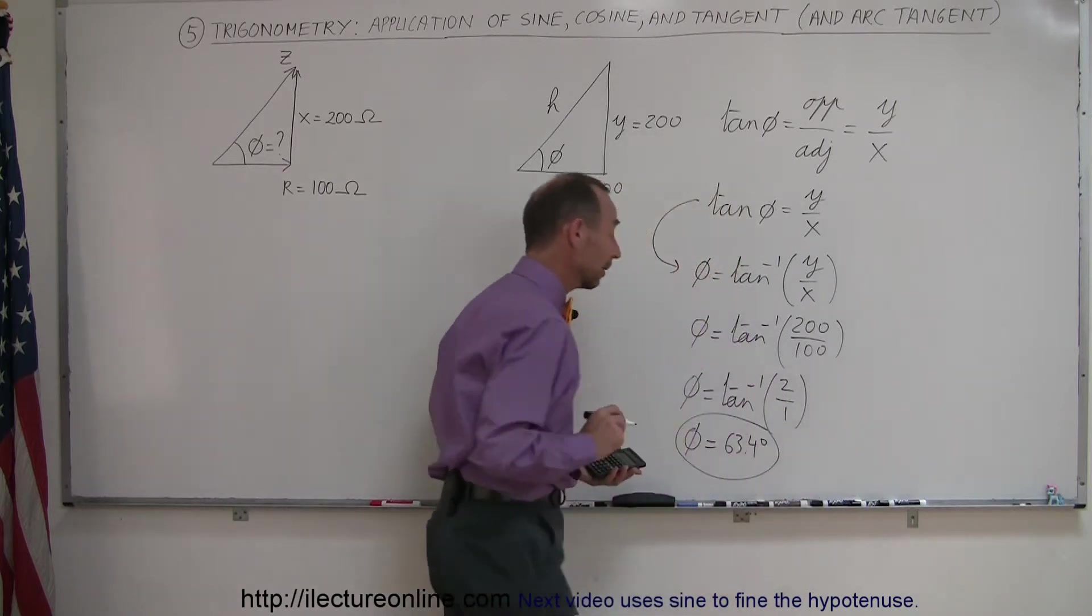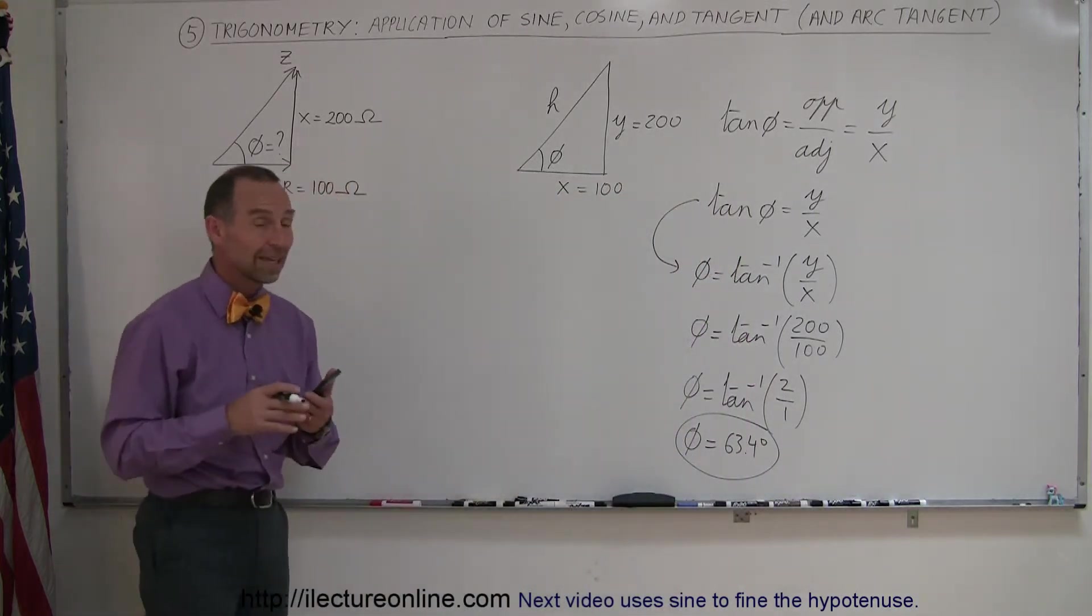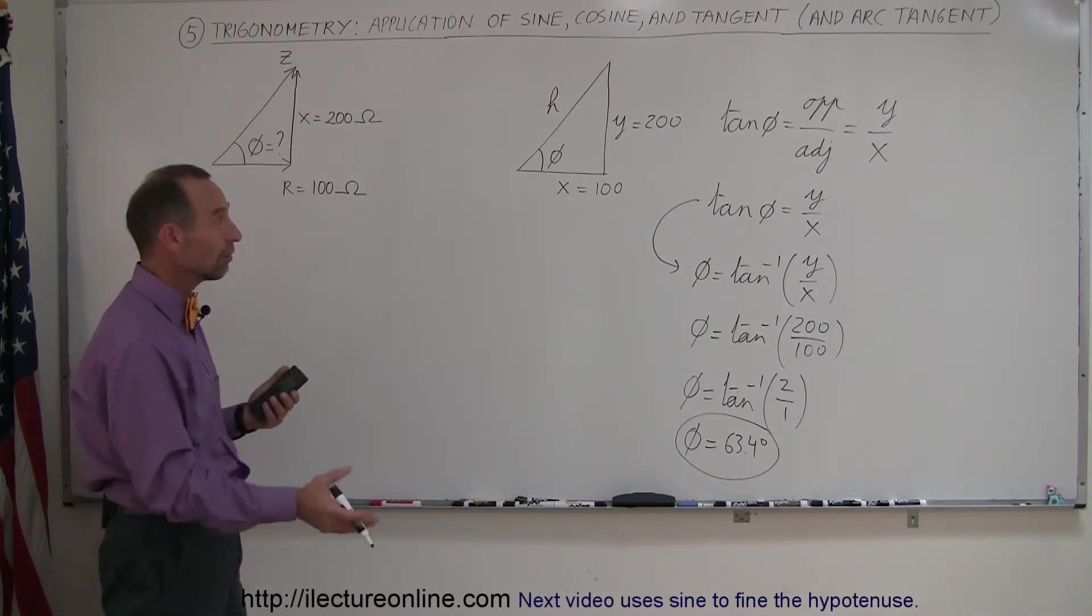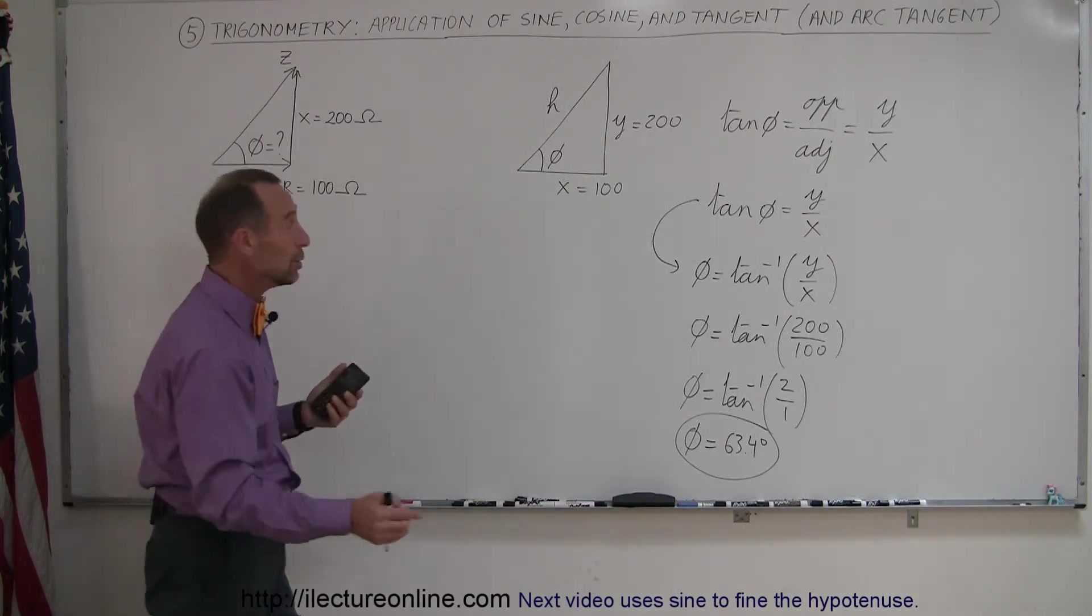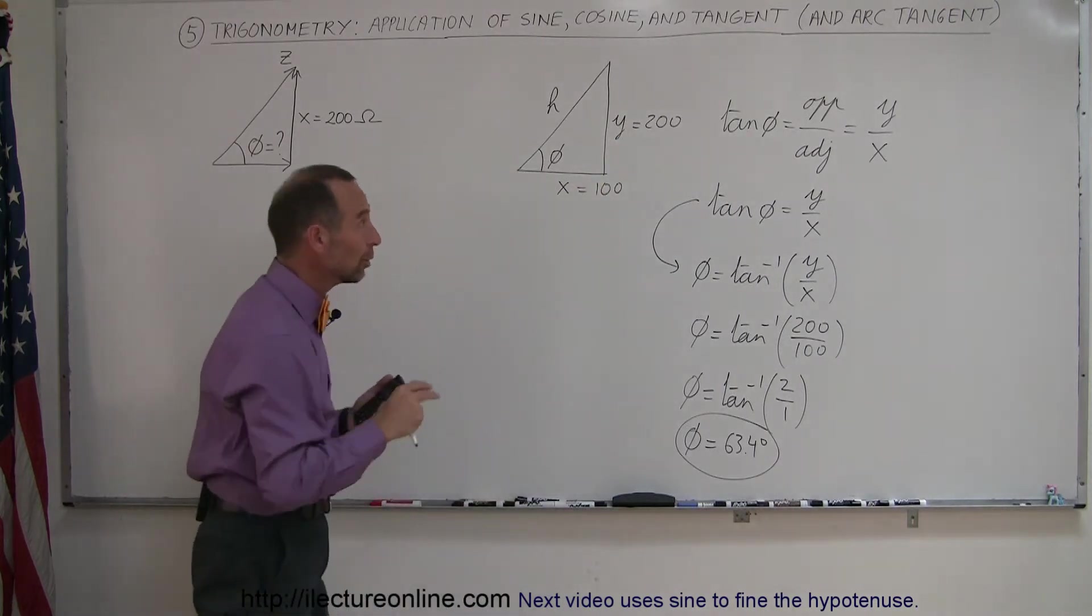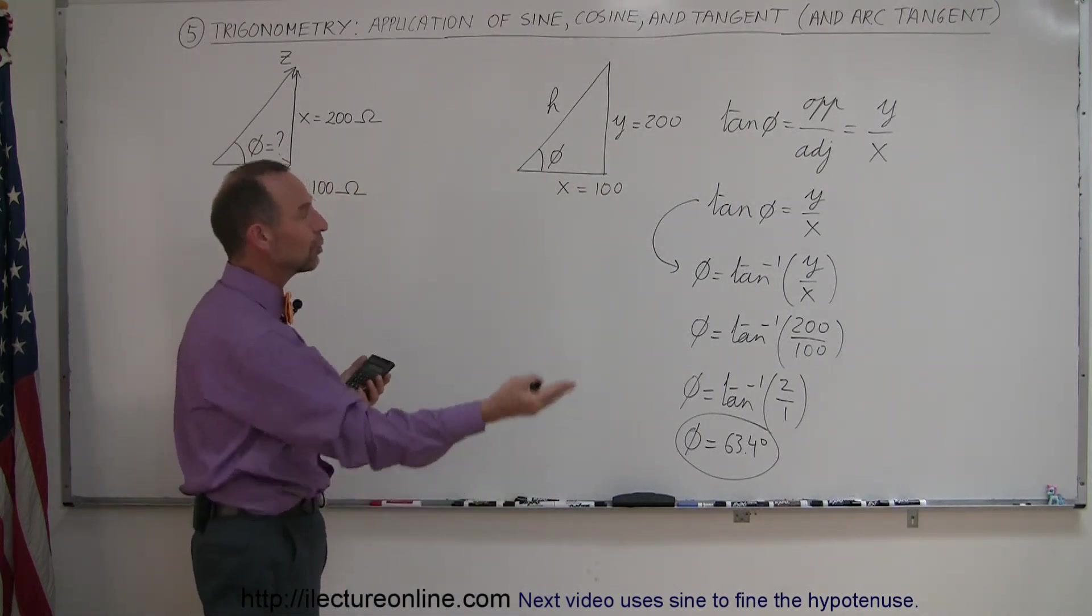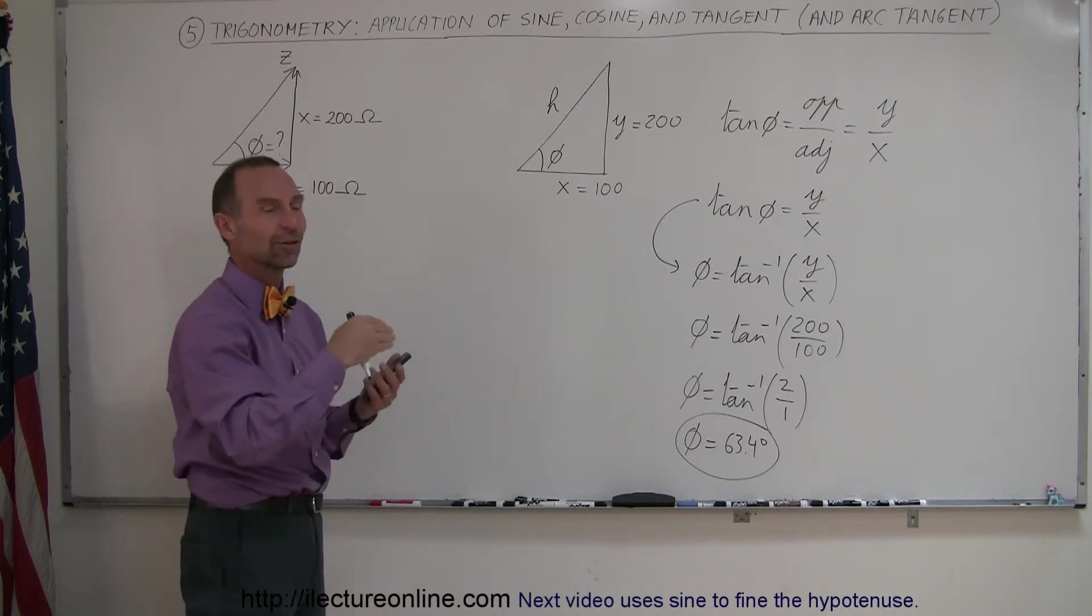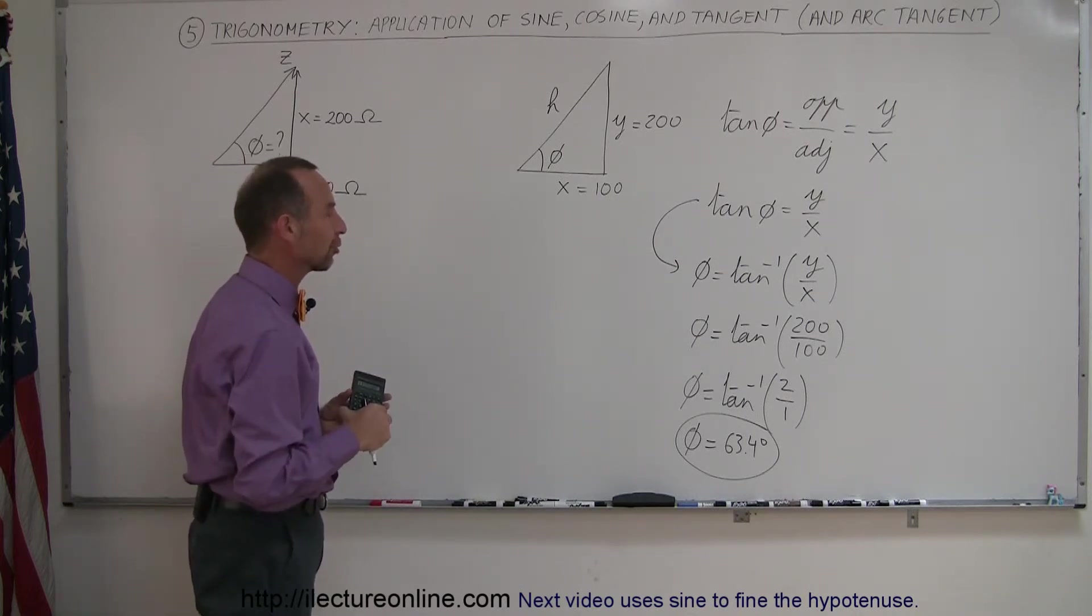Go ahead and try that on your calculator. So this allows us to use the inverse of the tangent function to find the angle. See, normally, we know what the angle is, and we're looking for y or for x or something like that. In this case, we know y and x, but we don't know the angle, so we do the reverse, the inverse. That's why we call it the arctangent or inverse tangent.